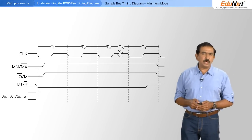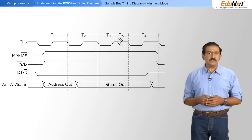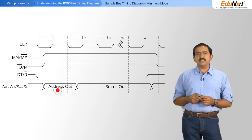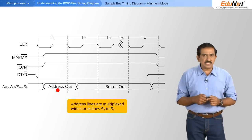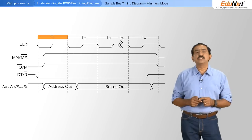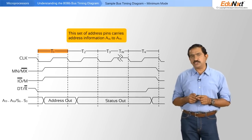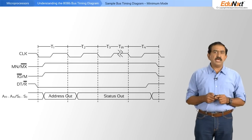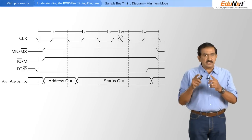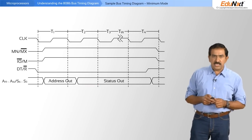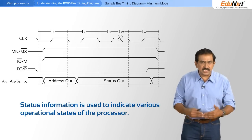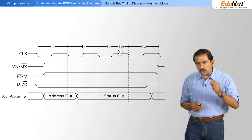Let us now move on to the top four address lines: A16, A17, A18 and A19. These address lines in the case of the 8086 are multiplexed with the status lines S0 to S3. The way it works is that in the first clock pulse, this set of pins carries address information A16 to A19. Subsequently, for the remaining three clock signals including wait states if any, the same pins carry status information, which is used to indicate various operational states of the processor.